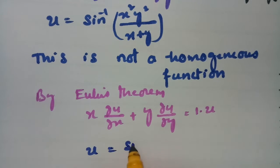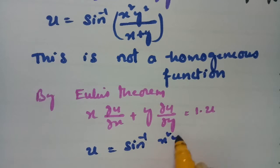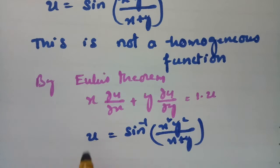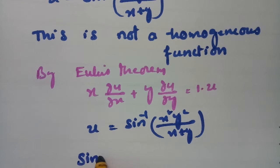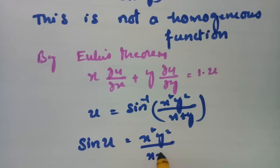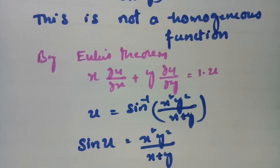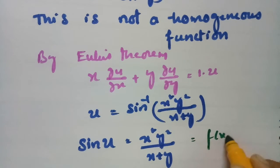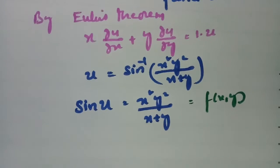Since u = sine inverse of (x²y²)/(x+y), and as it is not a homogeneous function, I am sending the sine to the other side. Therefore sine u = x²y²/(x+y), and I am naming this as the function f(x, y).